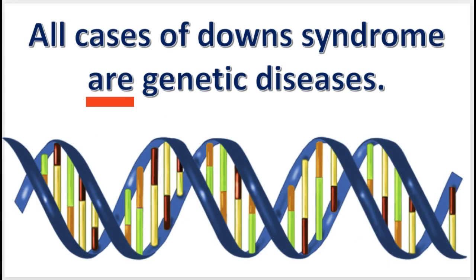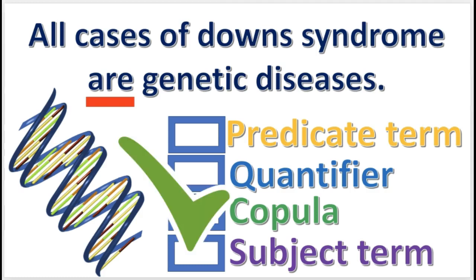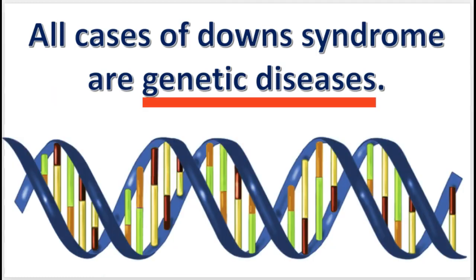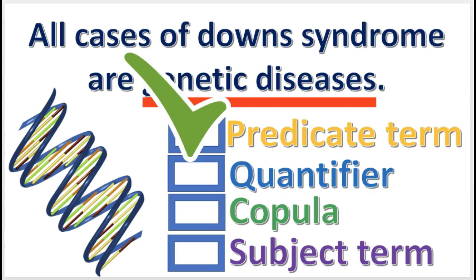Now, what is the word 'are' called? The answer will appear in 3, 2, 1. The answer is copula. What is 'genetic diseases' called? The answer in 3, 2, 1. Correct — it's the predicate term.